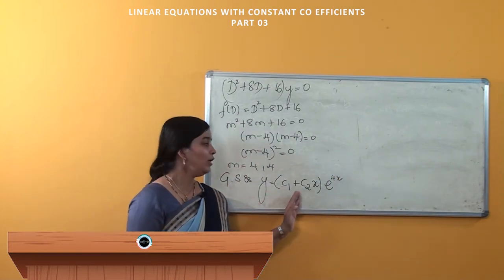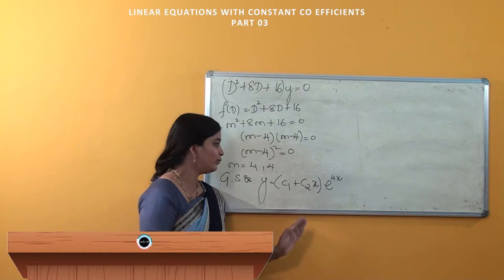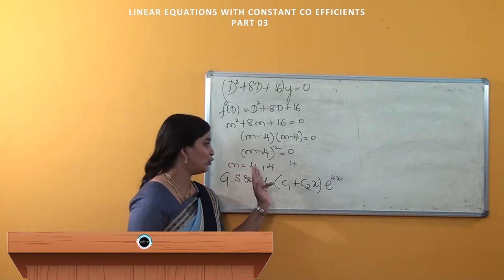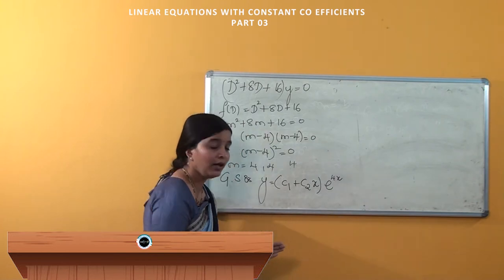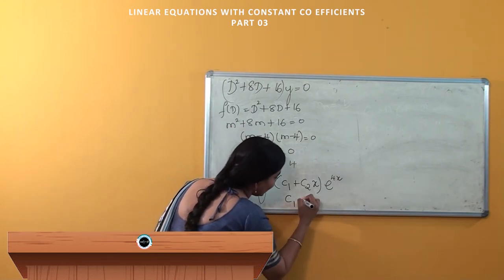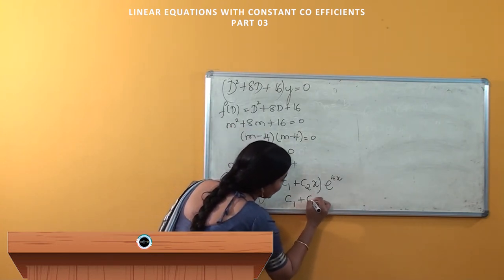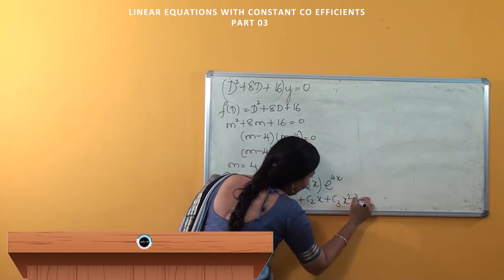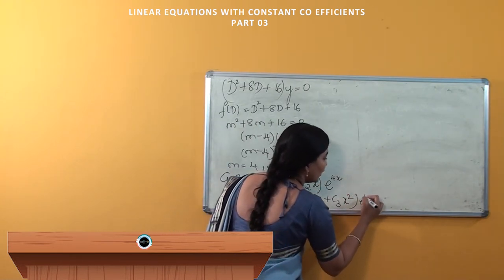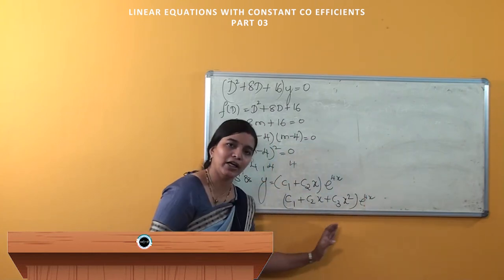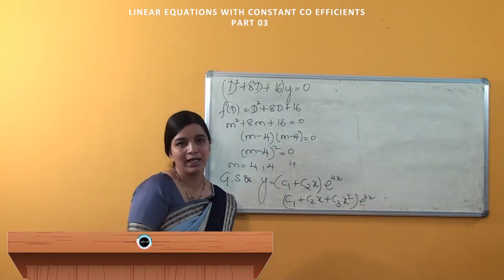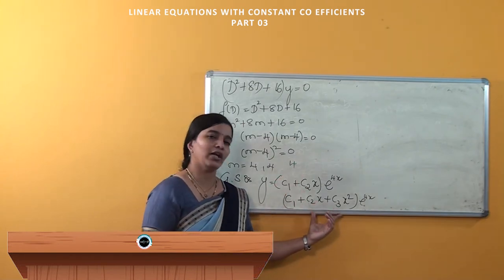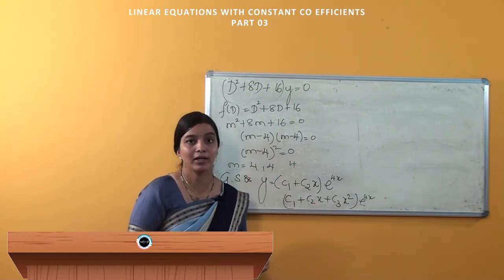If a root is repeated 3 times — suppose 4 appears 3 times — then you write it as y = (c1 + c2·x + c3·x²)·e^(4x). This continues if the number of repeated roots increases. Remember, we write it this way only when the roots are repeated.